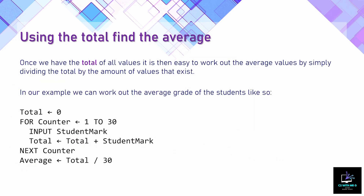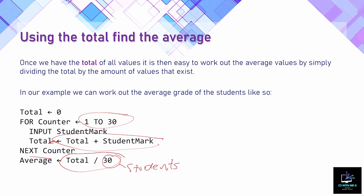The next method is finding the average. This goes back to the totalling algorithm — once we have a total, we divide it by the number of values input. Using a for loop from 1 to 30, we know there are 30 values, so we store all the input marks in a total variable. At the end of the algorithm, we divide total by 30, store the answer in an average variable, and output: the average mark is, followed by the average variable.